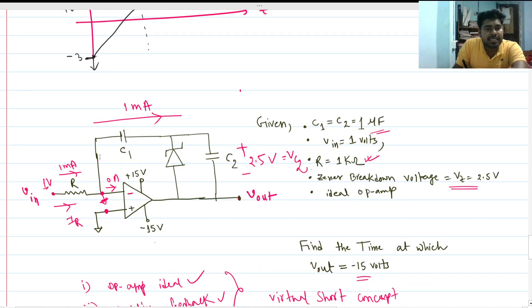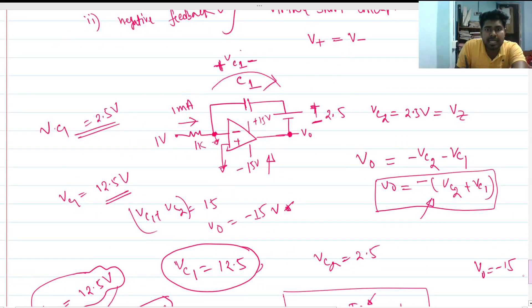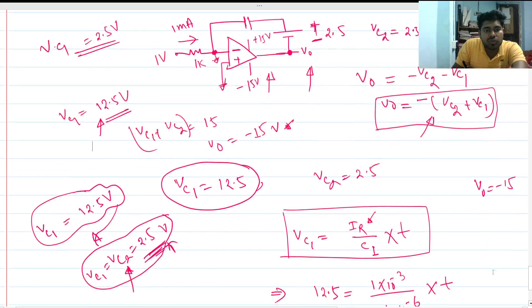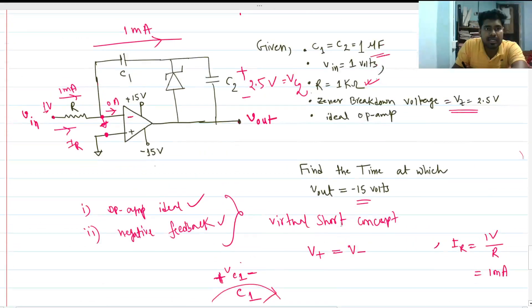To clarify: both capacitors are charging simultaneously, but when 2.5 volts appears across C2, the Zener conducts and C2 is no longer charging — the reduced circuit takes effect. The time required for VC1 to reach 12.5 volts already accounts for the time taken to charge C2 to 2.5 volts. So we only need to find the time at which VC1 reaches 12.5 volts, giving Vout equals minus 15 volts. This is the correct analysis.